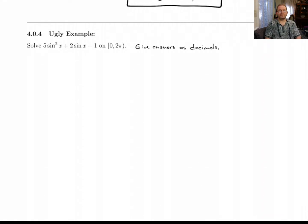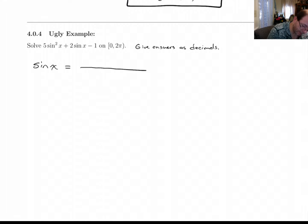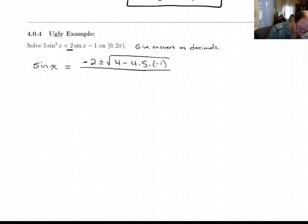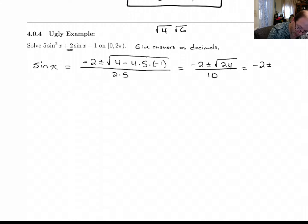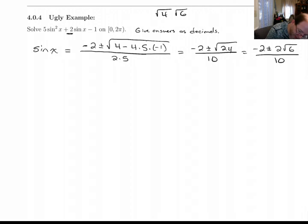Since it won't factor, we have to use the quadratic formula. Sine x equals negative b plus or minus the square root of b squared minus 4ac, all over 2a. Working that out gives minus 2 plus or minus the square root of 24 over 10. The square root of 24 breaks into square root of 4 times square root of 6, and square root of 4 is 2, giving 2 root 6 over 10. Canceling the 2, we get sine x equals negative 1 plus or minus square root of 6, all over 5.